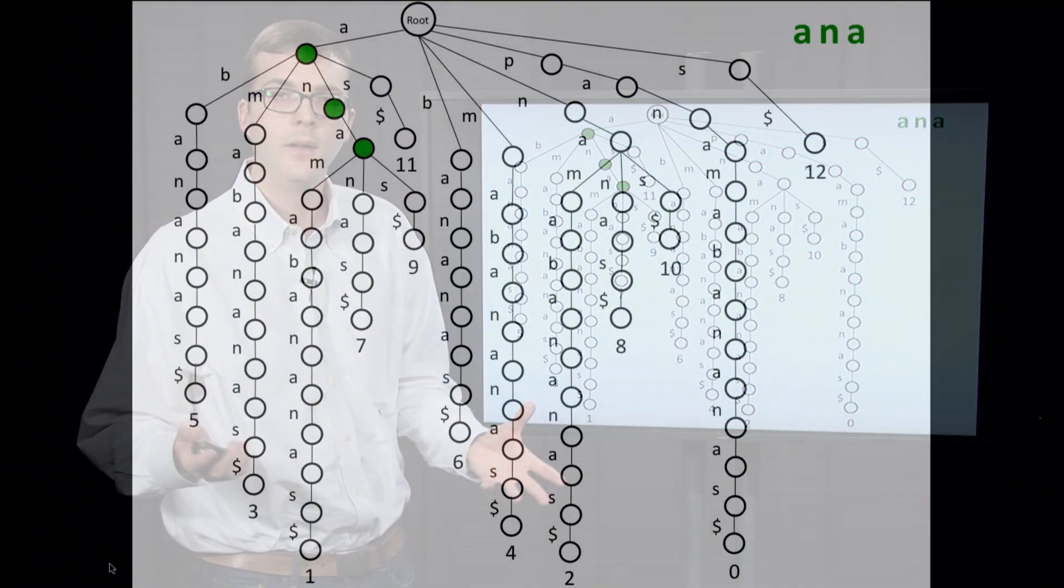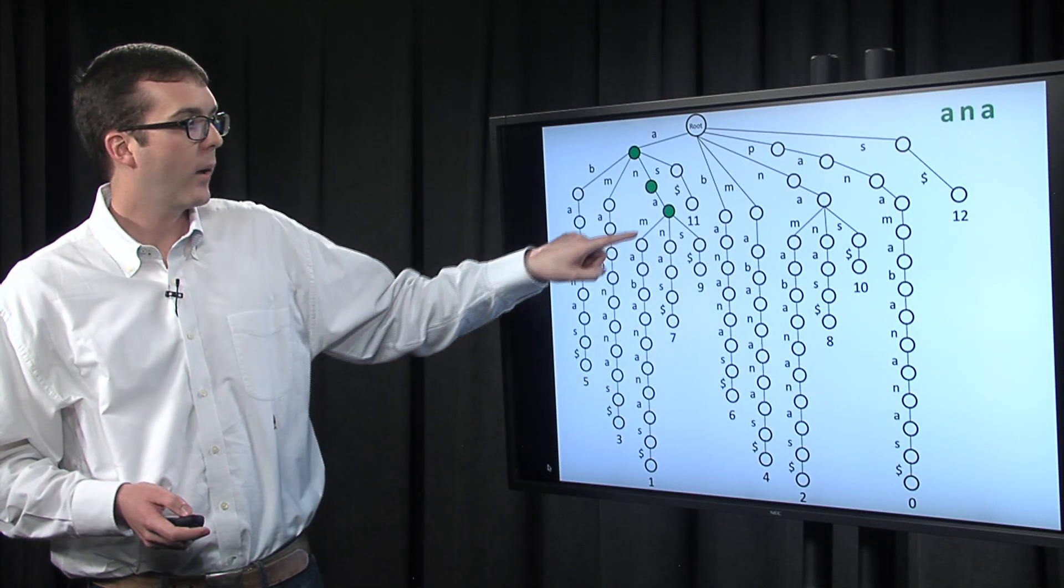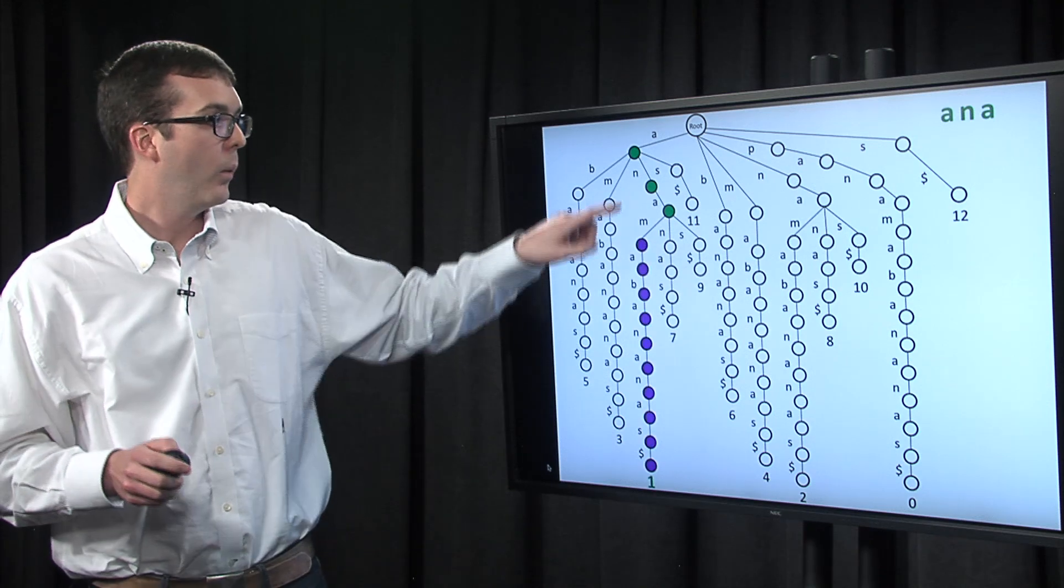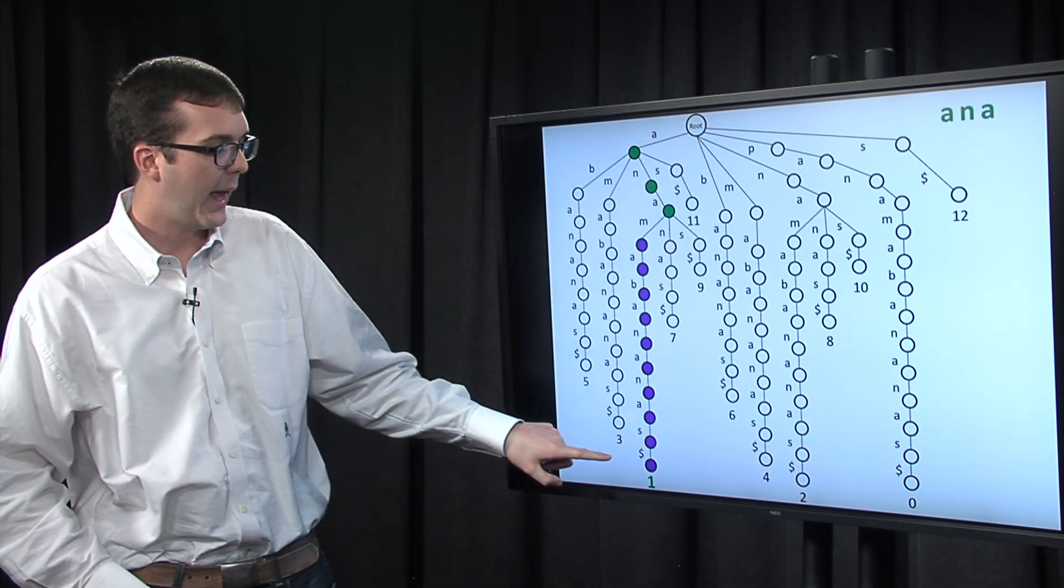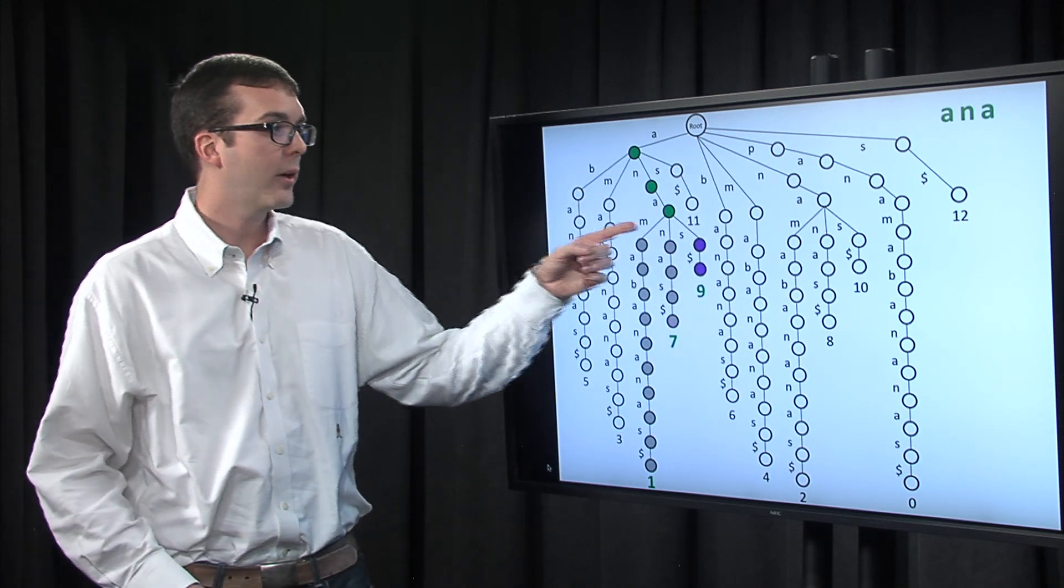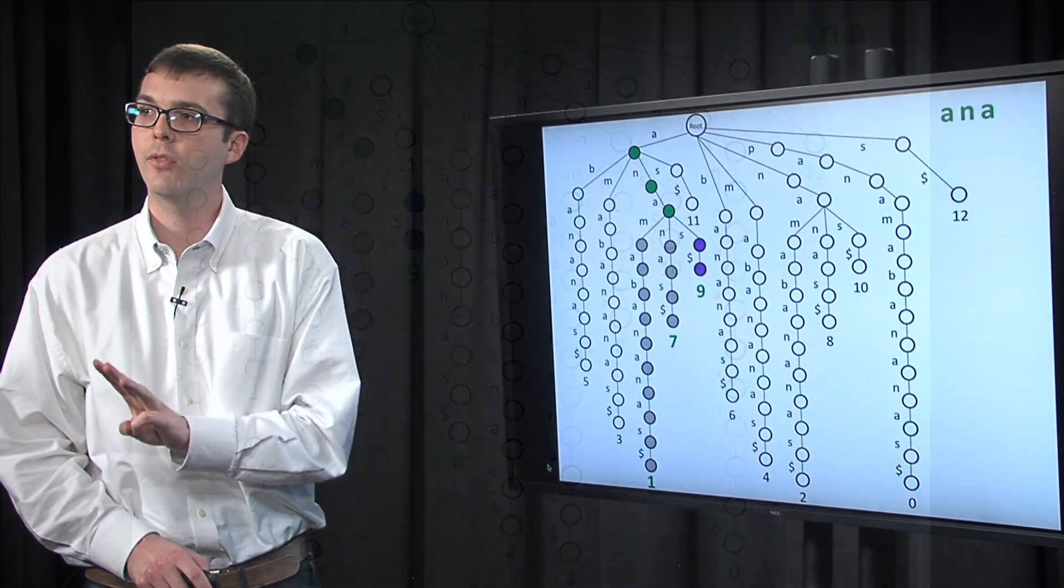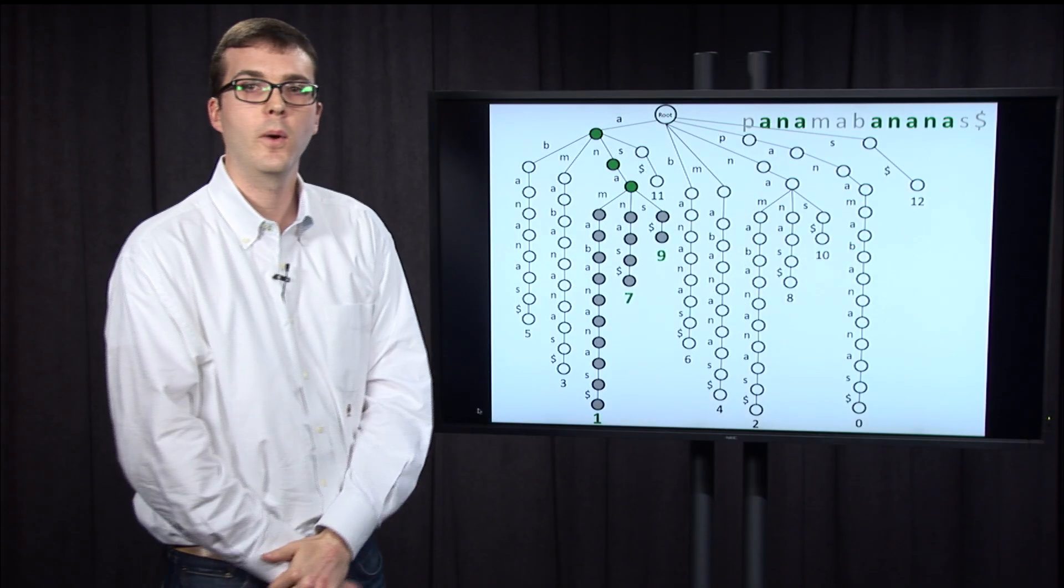Another example would be ana. This occurs in three different places in Panama bananas. And so when we found the match, we're nowhere near a leaf yet. In fact, we're at a node that branches. And so to find the starting position of all matches of ana, we need to walk down each of these three paths to a leaf. So if we walk down this path, we get starting position 1. If we walk down this path, we get starting position 7. And if we walk down this path, we get starting position 9. So it tells us that we have three starting positions, 1, 7, and 9. Notice that 7 and 9, the occurrence of ana overlaps. And this information tells us exactly where those patterns matched.